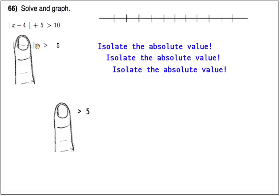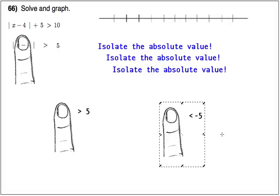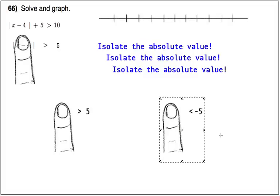So whatever is under my finger can also be true, will also prove true if it's less than negative 5. If what's under my finger is less than negative 5, then the original problem will also be true. And so there you see the split personality that I had to deal with.